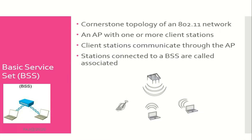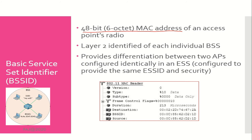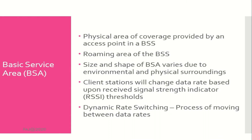Basic Service Set (BSS) is the cornerstone topology of an 802.11 network — an AP with one or more client stations, where client stations communicate through the AP. Stations connected to a BSS are called associated. Basic Service Set Identifier (BSSID) is the 48-bit, 6-octet MAC address of an access point's radio, serving as the layer 2 identifier of each individual BSS. Basic Service Area (BSA) is the physical area of coverage provided by an access point. Its size and shape varies due to environmental surroundings. Client stations change data rate based on received signal strength indicator (RSSI) thresholds — a process known as dynamic rate switching.